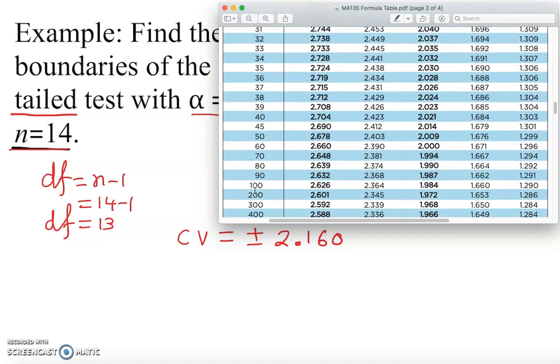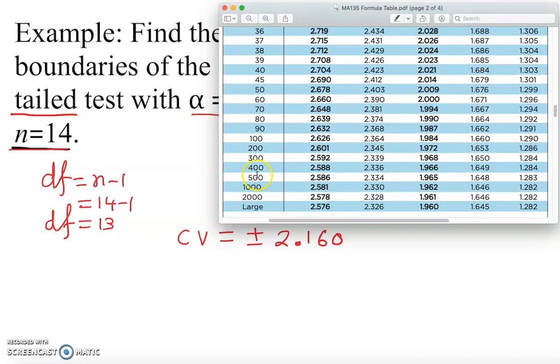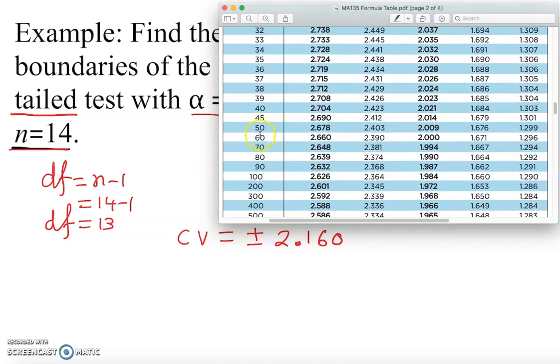I want to mention something here: if you don't find your degree of freedom in the table - sometimes the question asks you to find the critical value and you don't see that exact number - remember to go to the closest one, round to the closest one, and find your critical value.